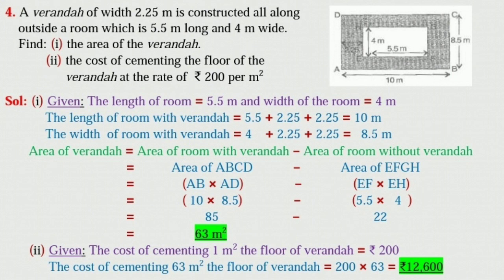Now, answer for the second. Here given, the cost of cementing 1 meter square of the floor of veranda is equal to 200 rupees. Therefore, the cost of cementing 63 meter square of the floor of veranda is equal to 200 into 63 is equal to 12,600 rupees. It's clear everyone? Very good.